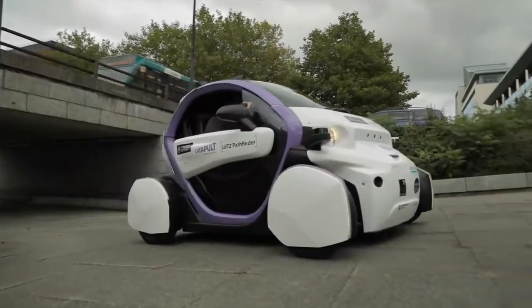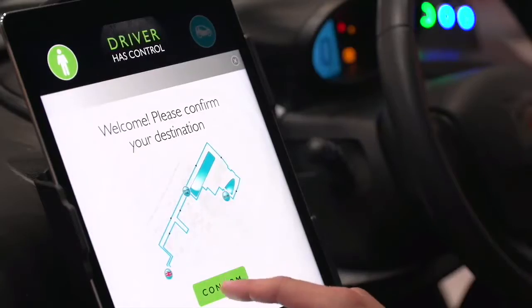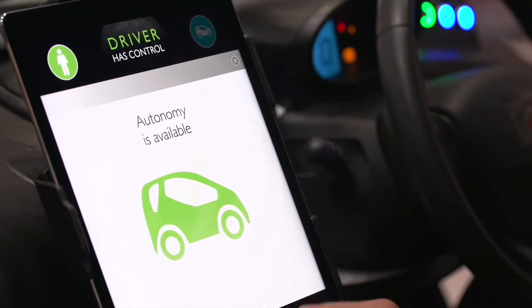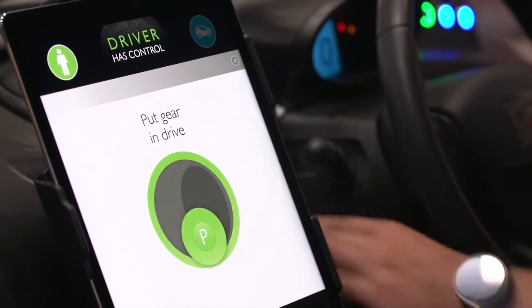When you get into the vehicle there will be an iPad and the iPad will say would you like to be autonomous and you'll say yeah I would and it will guide you through a few things. So we'll say okay put your foot on the brake to start with so you know that you're in a controlled position. Put the steering wheel in the middle, okay take your hands off the steering wheel, release the brake, you're off.